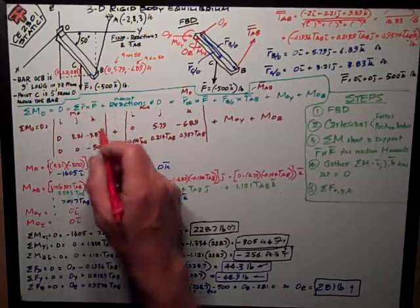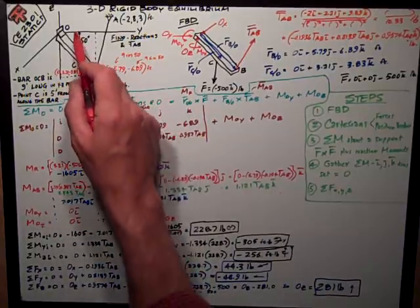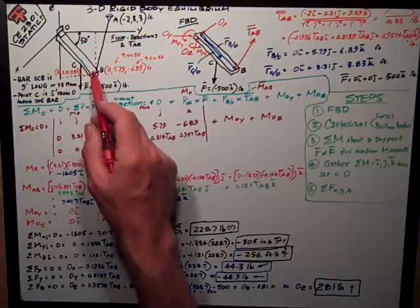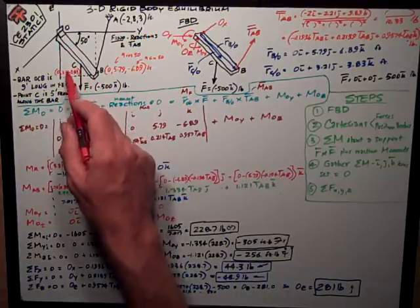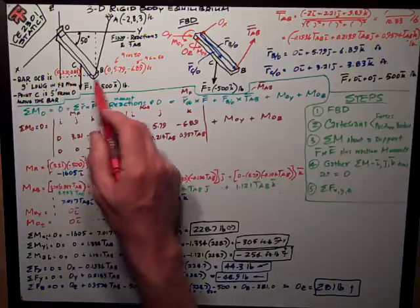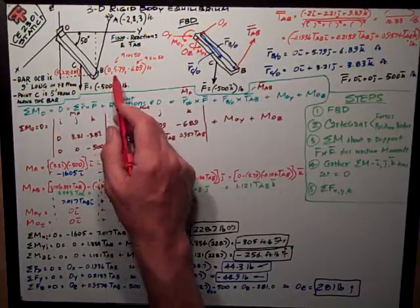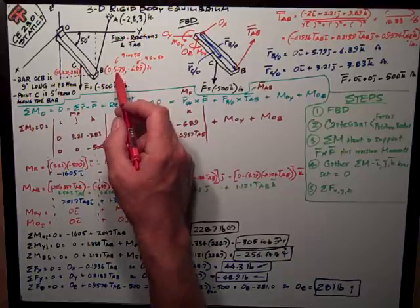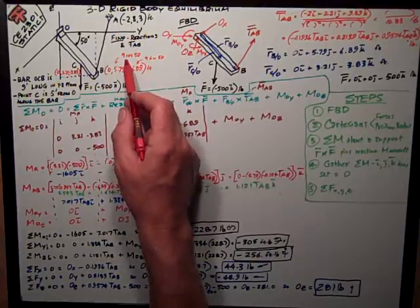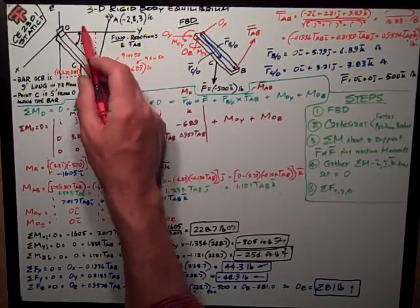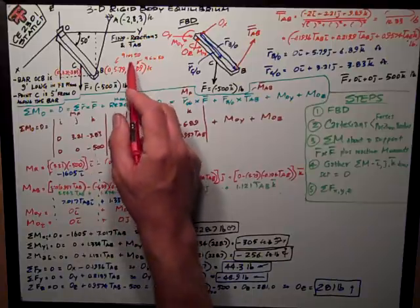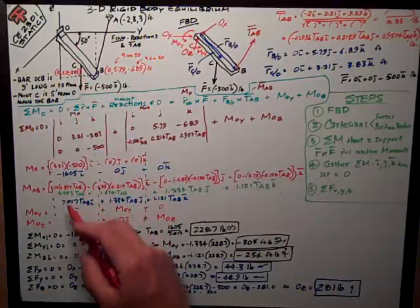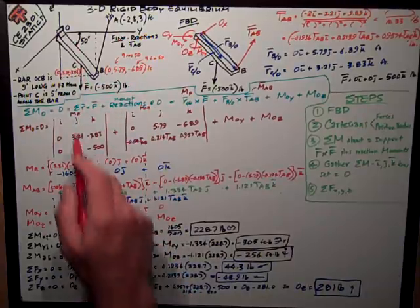So I'm going to have to do some geometry, and using that 50-degree angle and the length of those two points, 9 feet and then 5 feet, and I can get these coordinates of point C and point B, which I've given here. For instance, B is 0 in the X because it's lying in the Z-Y plane, 5.79, which is just 9 times the cosine of 50, this length here, and the Y, and negative 6.89, which is 9 sine of 50, down in the Z direction. Do the same thing for C.